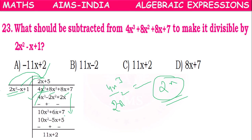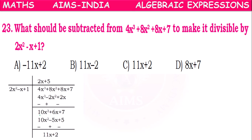So now this remainder will become the new dividend. The first term 10x² divided by the divisor's first term 2x² equals 5. So 5 will be the second term in the quotient.